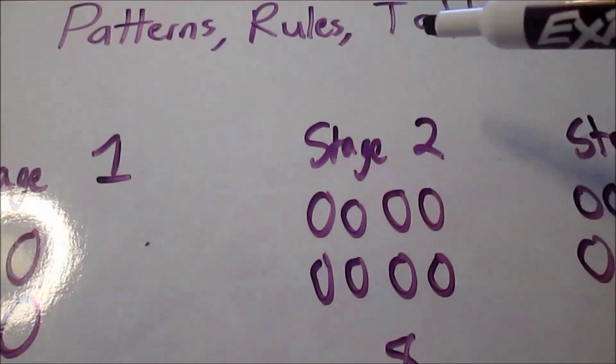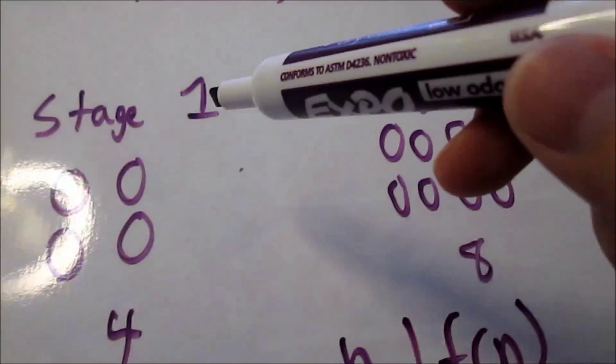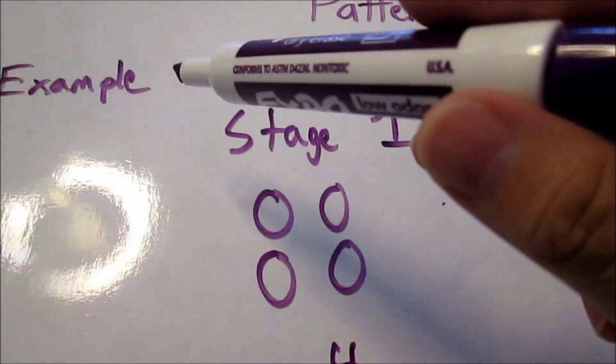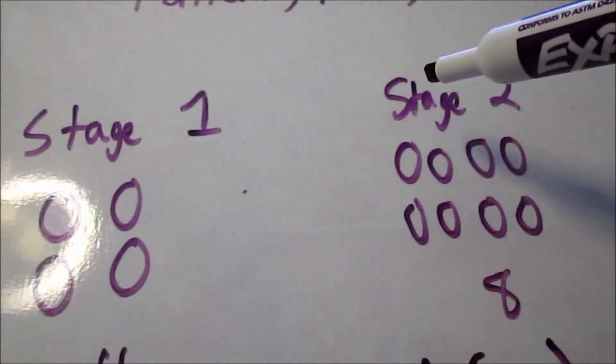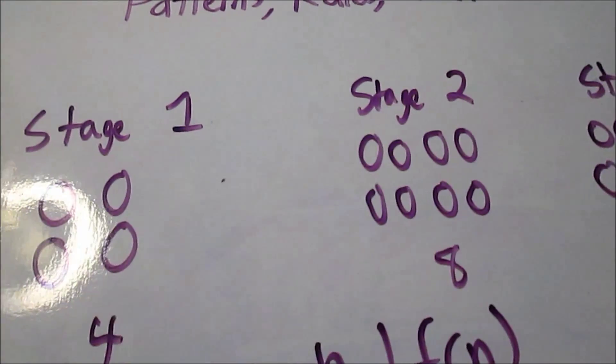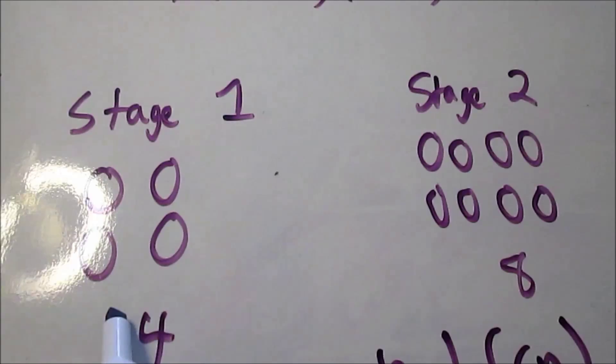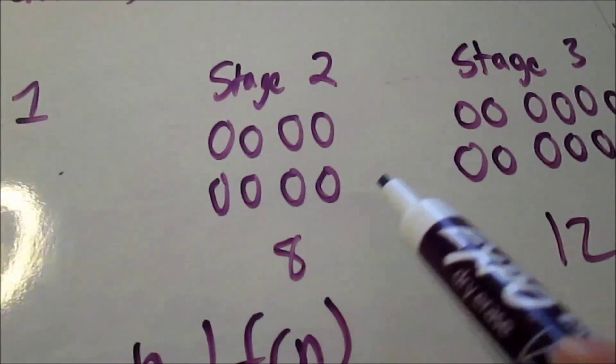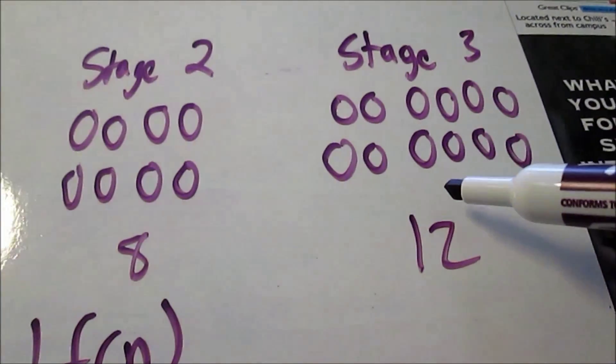Okay, continuing on with patterns, rules, and tables, this is another type of example. I have here three stages, and each stage has a certain number of circles in them. Stage one has four circles, stage two has eight circles, stage three has twelve circles.